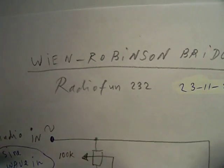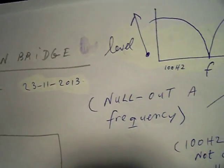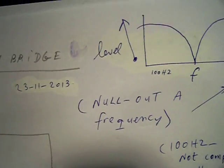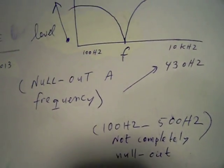In a book I found this circuit, the Wien-Robinson bridge, and it was combined in that book with a lot of mathematics formulas.